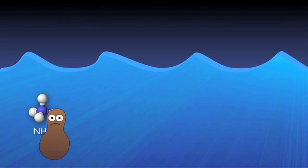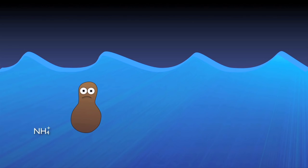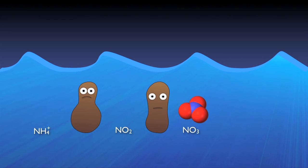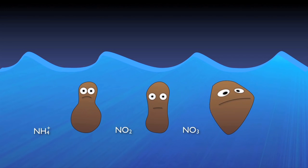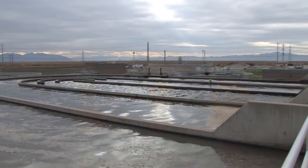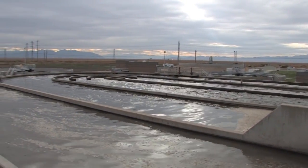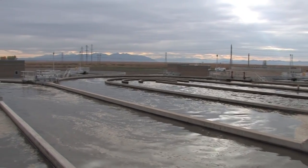Specialized autotrophic bacteria, or nitrifiers, convert the ammonium to nitrite (NO2) and then to nitrate (NO3) through various biological processes. As dissolved oxygen is depleted by the nitrifiers and other organisms in the basin, other specialized heterotrophic bacteria — denitrifiers — are able to thrive by using the oxygen attached to the nitrate molecules for respiration, creating nitrogen gas as a byproduct. The nitrogen gas then simply bubbles out of the water into the atmosphere. Let's go back to the beginning and take a closer look at each of these important steps in the nitrogen removal process.